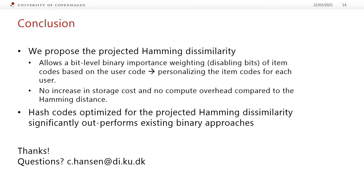In conclusion, we propose the projected Hamming dissimilarity, which effectively allows bit-level binary importance rating corresponding to disabling certain bits of the item codes based on the user code. This can also be seen as a type of personalization of the item codes to fit each individual user. Surprisingly, this comes with no increase in storage cost and no compute overhead compared to the Hamming distance. When hash codes are optimized for the projected Hamming dissimilarity, we can significantly outperform existing binary approaches and obtain performances quite similar to matrix factorization in the real-valued setting. Thank you for listening, and feel free to write me an email with any questions.